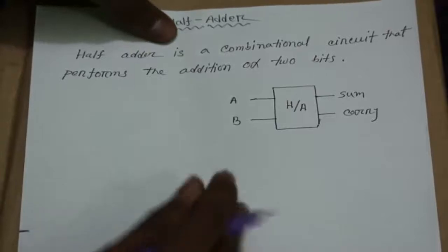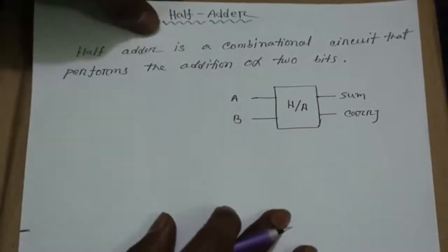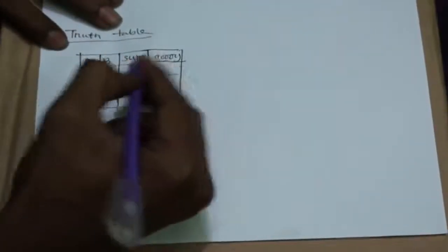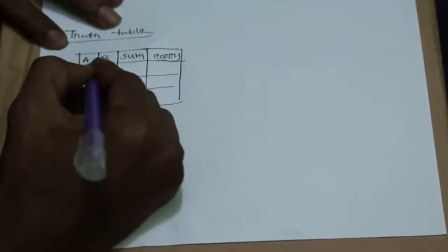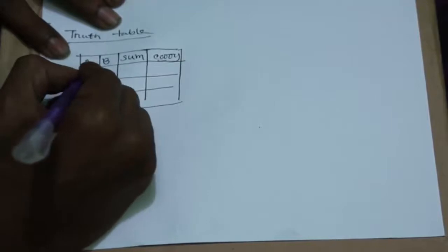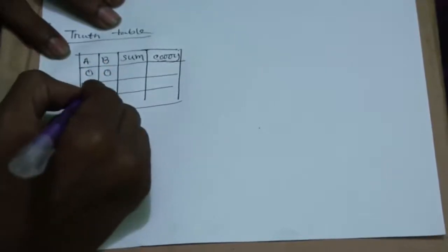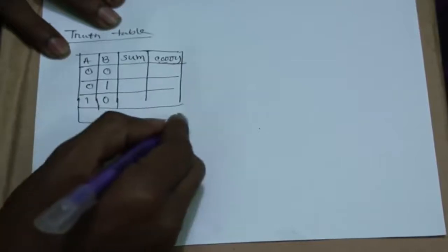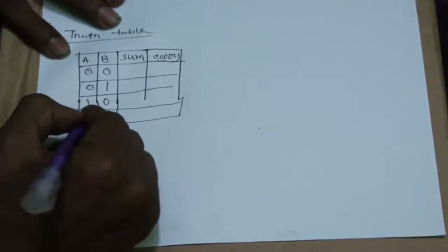Let's see the truth table of half adder. Here we see the 2 inputs are A and B and the 2 outputs are SUM and CARRY. Now the inputs are 0, 0, then 0, 1, then 1, 0, and 1, 1.